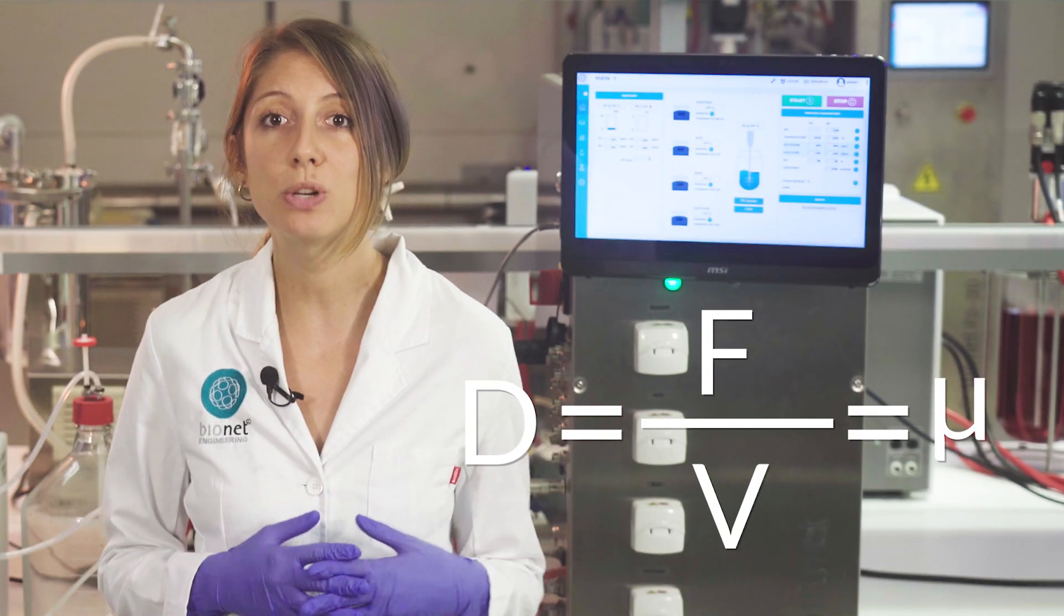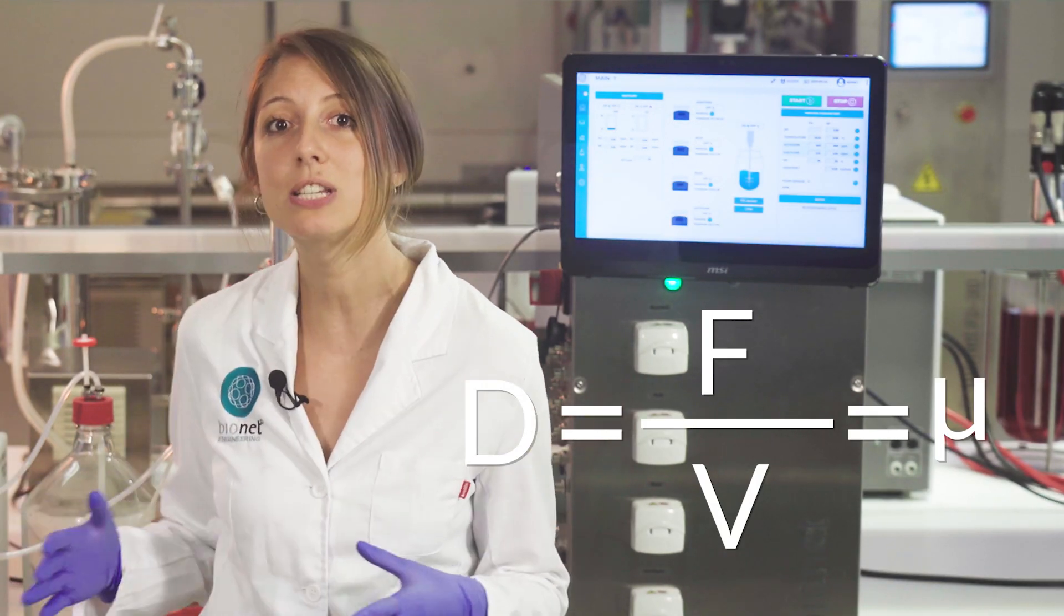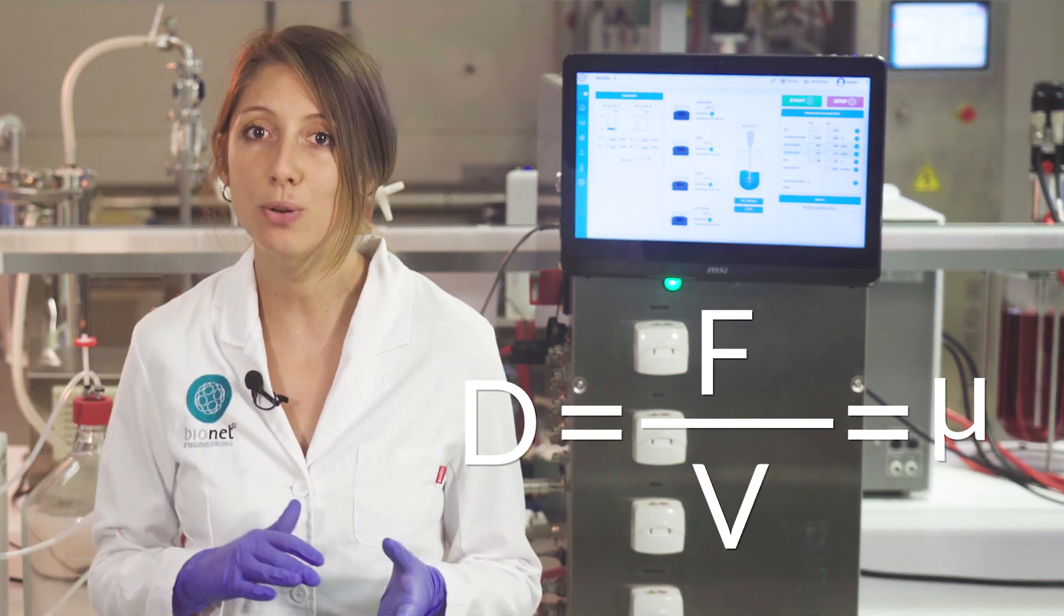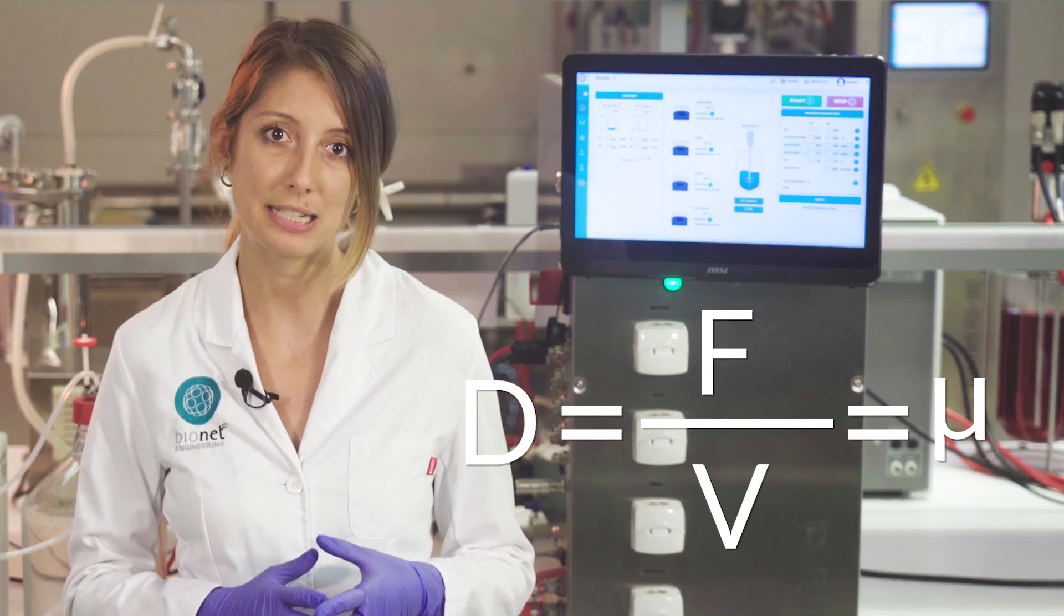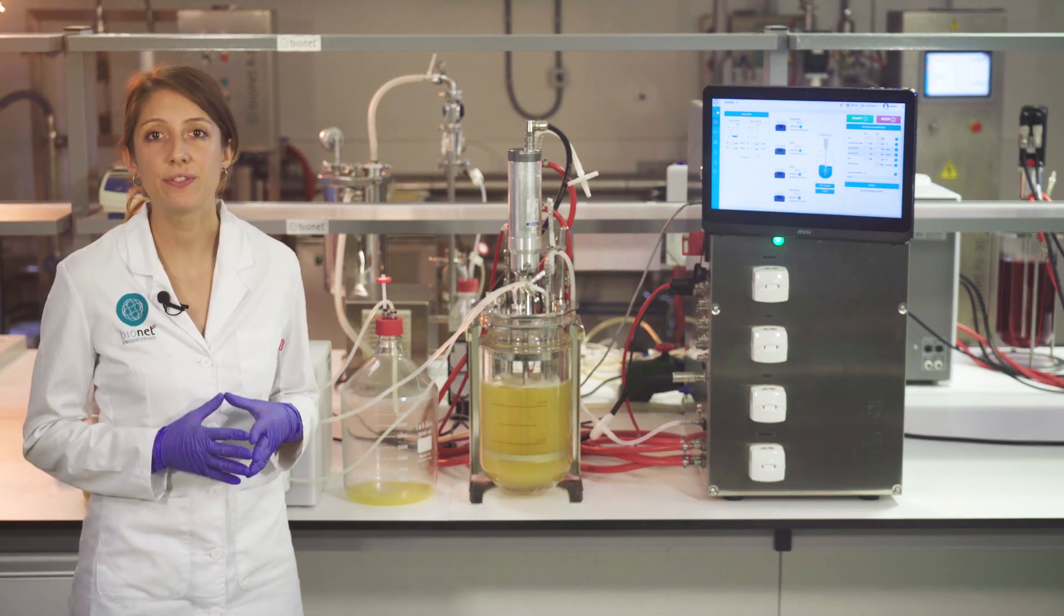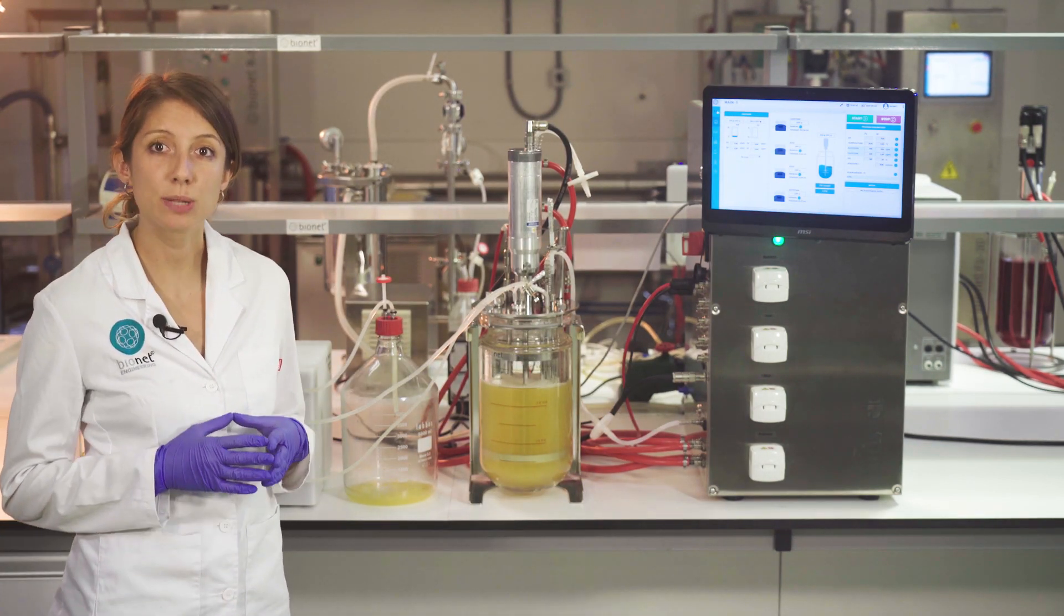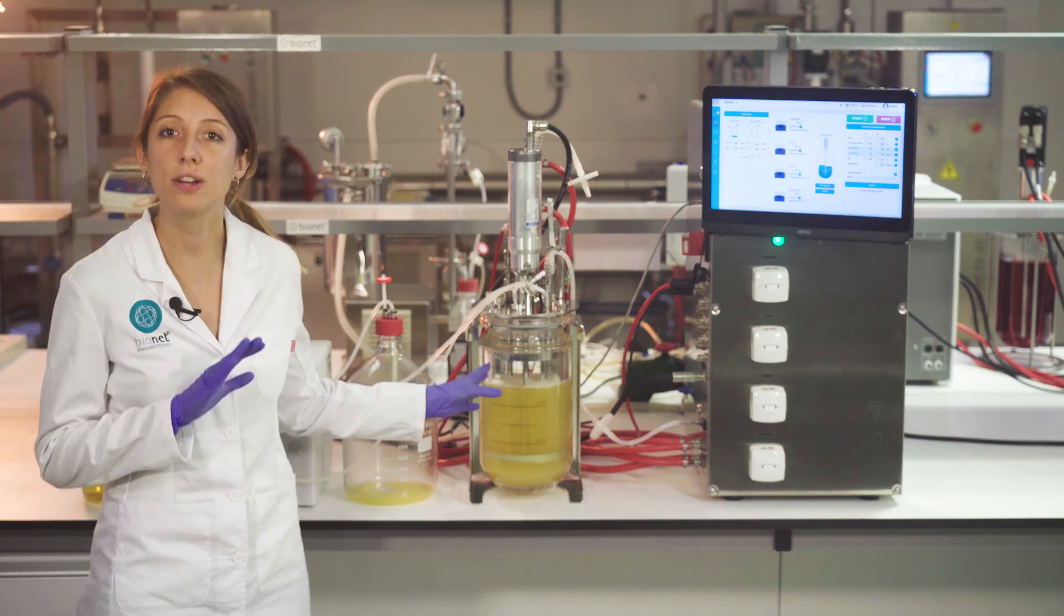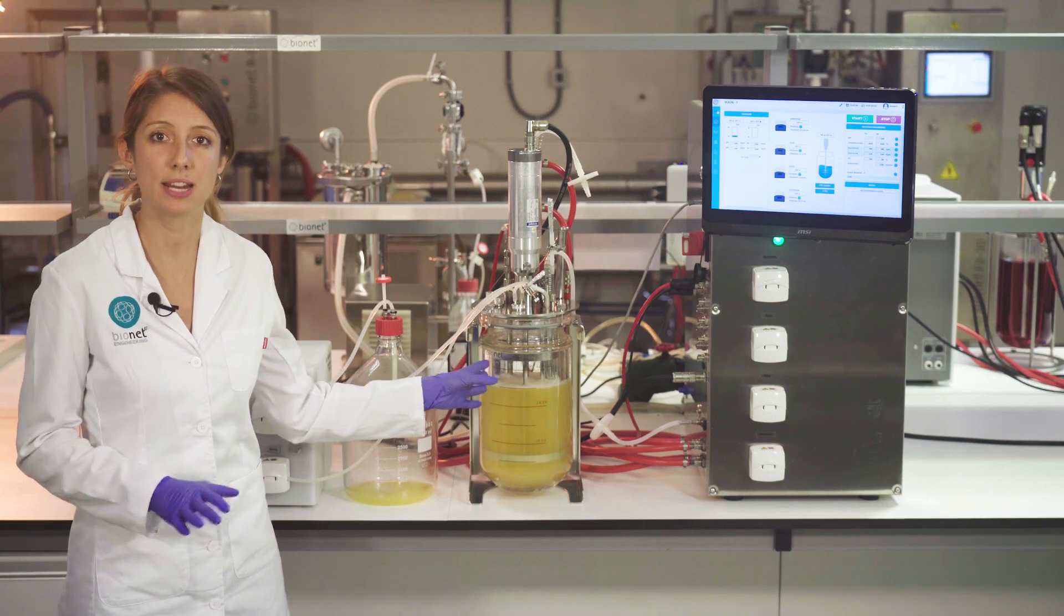Therefore, the user will choose the dilution rate that results in the specific growth rate in the log phase at the point where no substrate is being accumulated. In this particular case, this will be 0.15 per hour, which is as close as possible to the maximum growth rate of this microorganism while no accumulation of substrate is taking place.